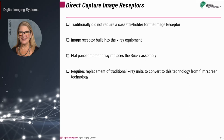Direct capture conversion systems were originally cassetteless systems, with the image receptor being an integral part of the X-ray unit itself. The flat panel detector replaced the Bucky assembly and was never touched by the technologist. Traditional X-ray units had to be replaced when converting from film screen to digital imaging. Today, there are wireless detectors that can be used with existing X-ray equipment.